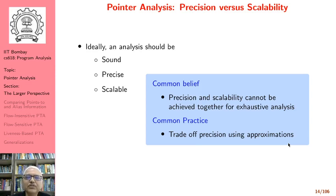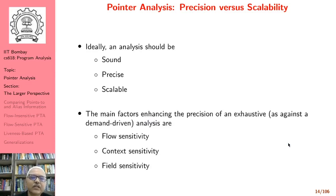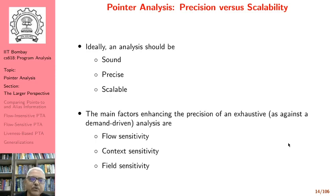The common belief in the pointer analysis world is that precision and scalability cannot be achieved together for exhaustive pointer analysis. The common practice is to trade off precision using approximation in order to gain scalability. The main factors enhancing precision are flow sensitivity, context sensitivity, and field sensitivity, which we will look at in a few minutes.